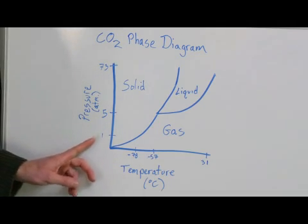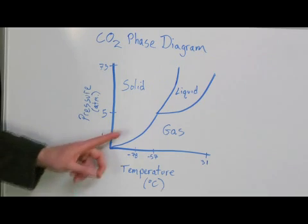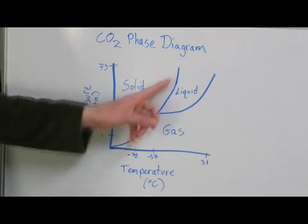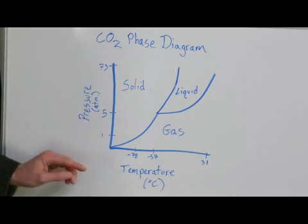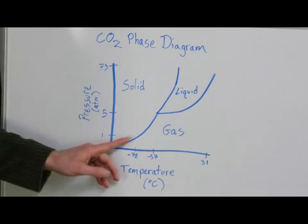So to answer the question, at what temperature does CO2 freeze, we have to look at this line that divides it. Anything on the left side of the line, CO2 is going to be a solid. So at one atmosphere, we're right here.